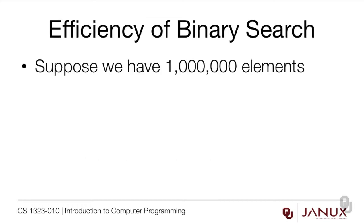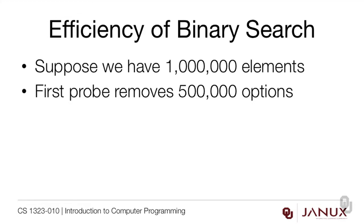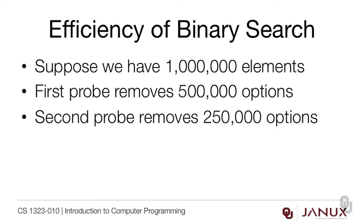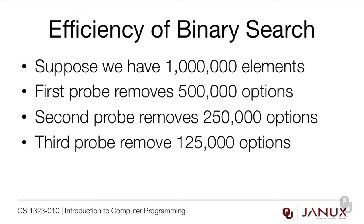Let's talk about the efficiency here. Suppose we're searching a list that has a million elements in it. In the context of today's computer science, this is not an especially large group of data. The first probe removes half a million elements from consideration - so you do one comparison and you know that half of the million elements aren't it. That's getting a good bang for your buck. The second probe removes a quarter of a million options. The third one will remove 125,000. With just three probes, we've removed 875,000 choices out of a million. That is a tremendous increase in efficiency over stepping through an array one position at a time.